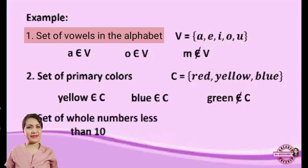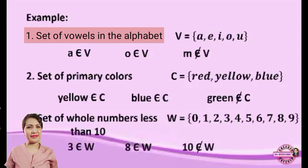Third, set of whole numbers less than 10. So we have 0 up to 9. 3 is an element of W. 8 is an element of W. But 10 is not an element of W.